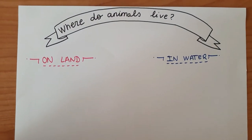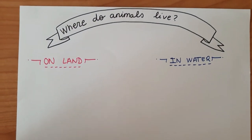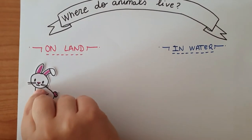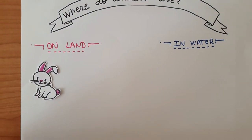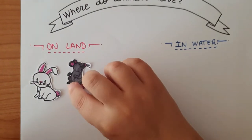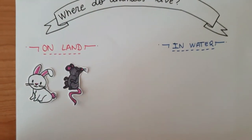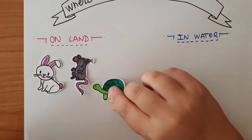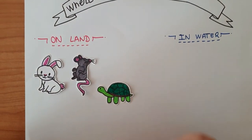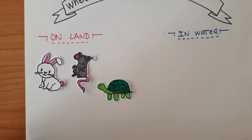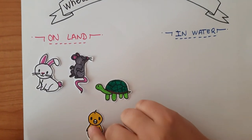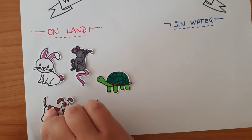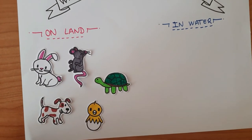Some animals that live on land are the rabbit, the mouse, the tortoise, the chick, and the dog.